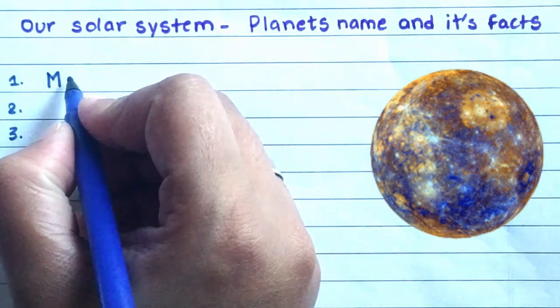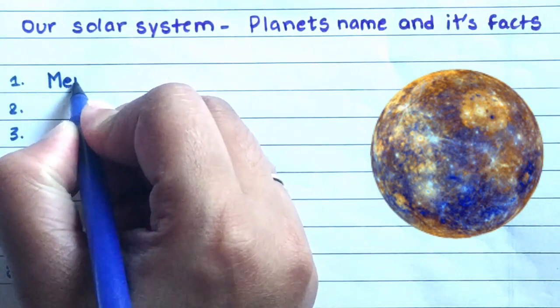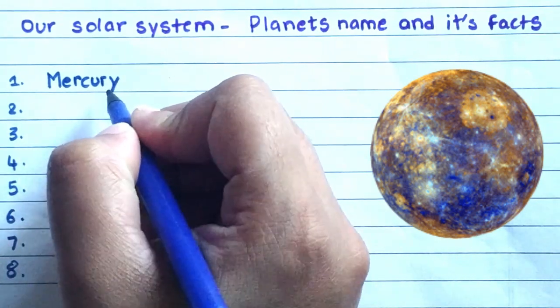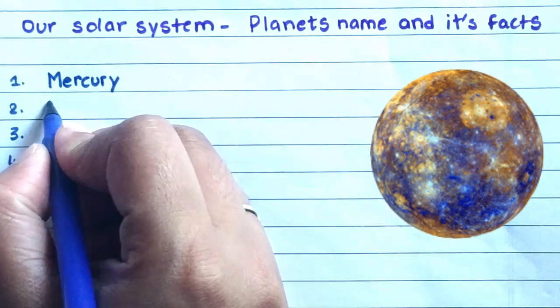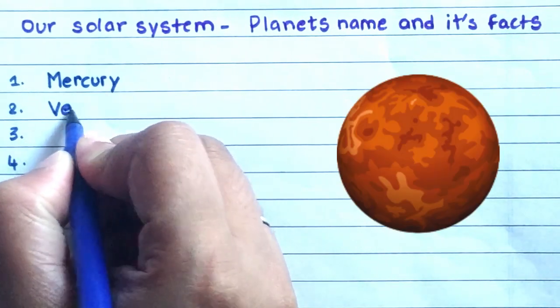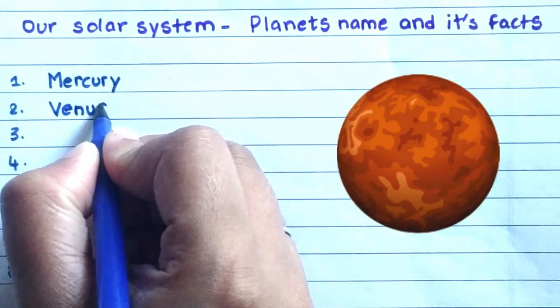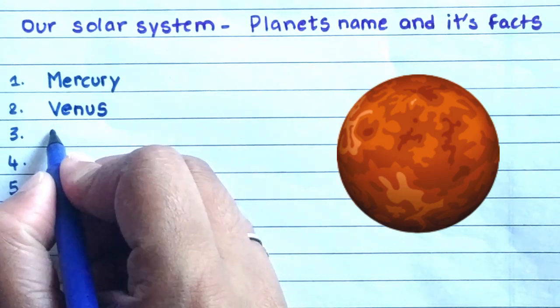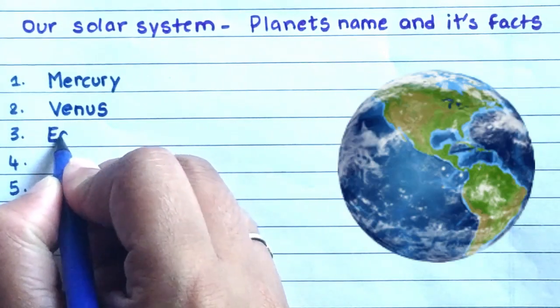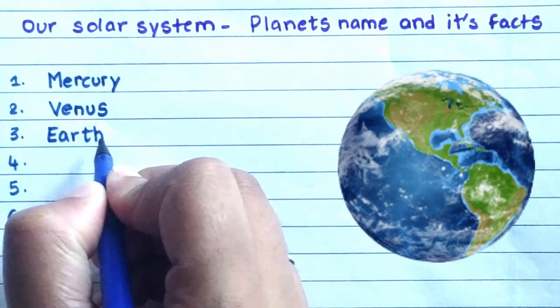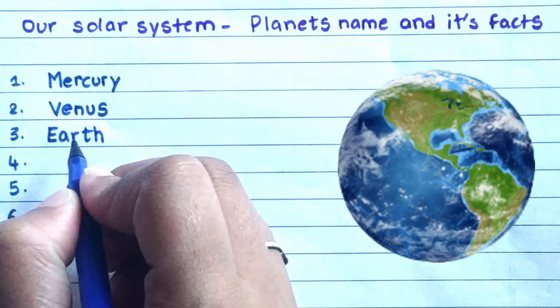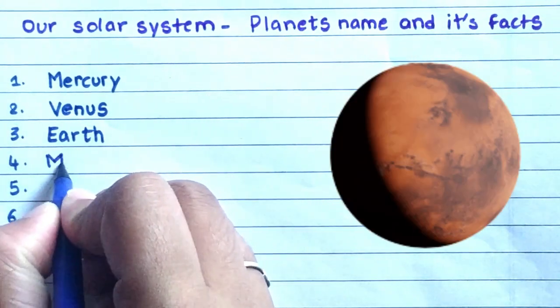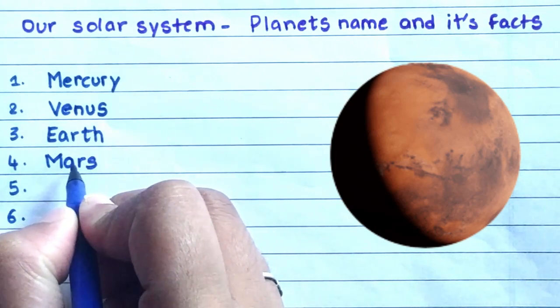M-E-R-C-U-R-Y, Mercury. V-E-N-U-S, Venus. E-A-R-T-H, Earth. M-A-R-S, Mars.